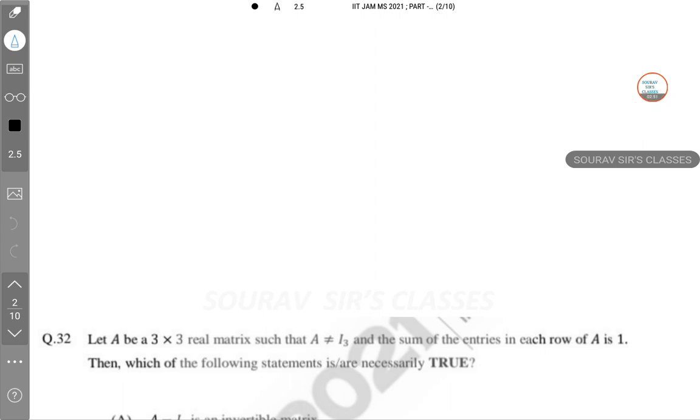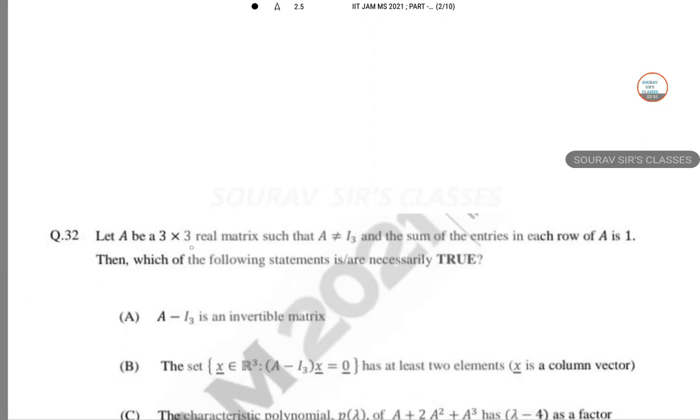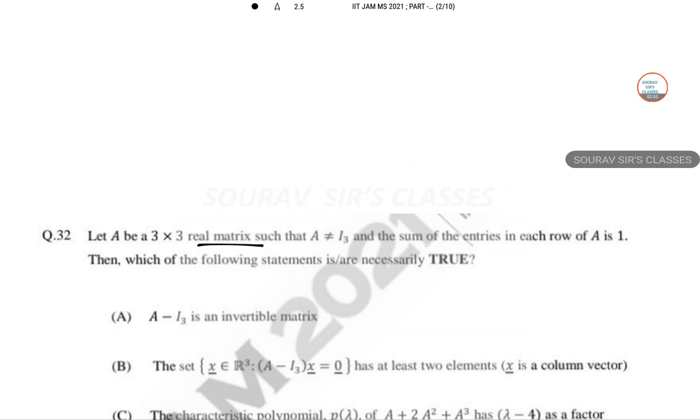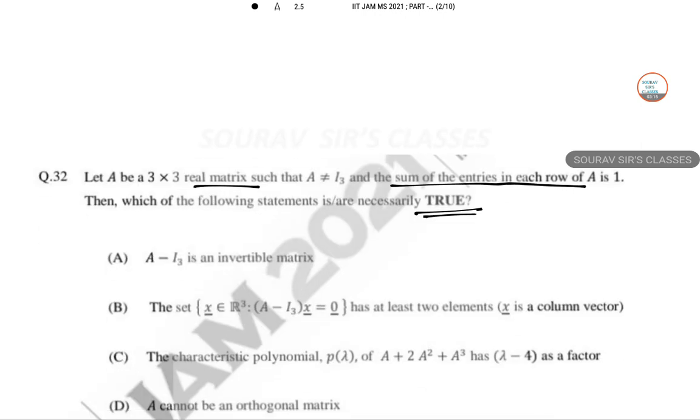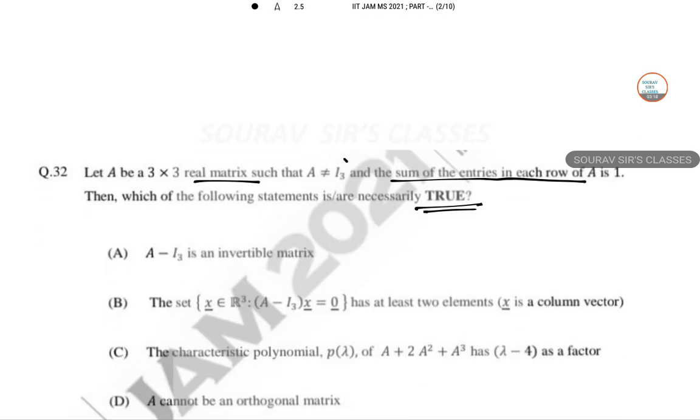Question 32: Let A be a 3 cross 3 real matrix such that A is not equal to I₃, and the sum of the entries in each row of A is 1. Then which of the following statement is necessarily true? We can take any matrix-based structure. Remember that A minus I₃ is also not equal to 0.